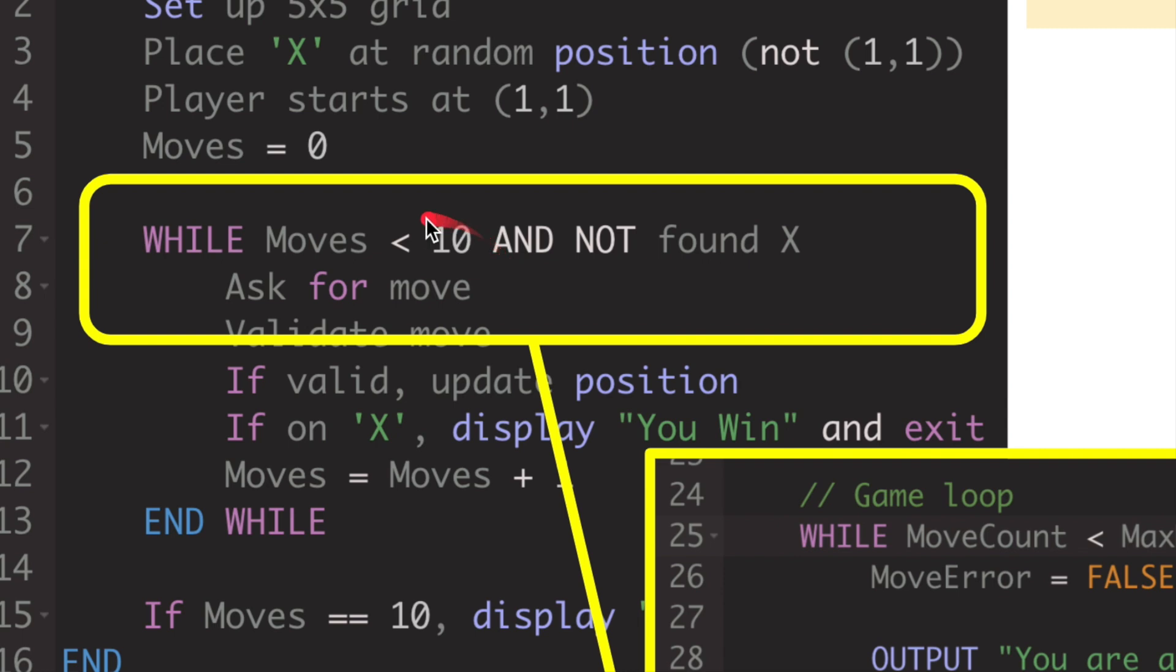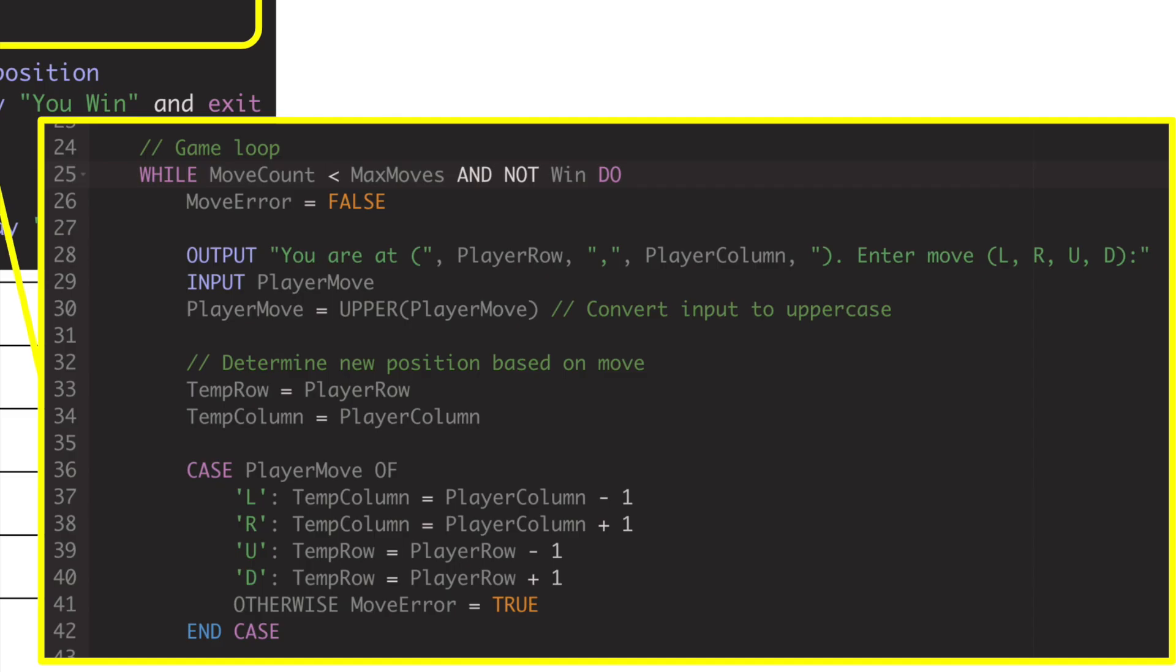Now I'll zoom in a little bit on this. While moves is less than 10 and not found X, ask for the move. We're going to start the game loop. This is going to be a big while loop. Everything's going to be contained within this while loop. So while the move count is less than max moves and not win, do move error equals false. So we're going to set the move error to false. Output 'You are at' player row, player column, basically 1-1. 'Enter move left, right, up, or down.' Input player move. So the person inputs the move. Player move equals upper player move. We've set L-R-U-D to uppercase. I've done some naming conventions. I've done some validations. So whatever somebody types in, it's going to set that letter to uppercase using this.